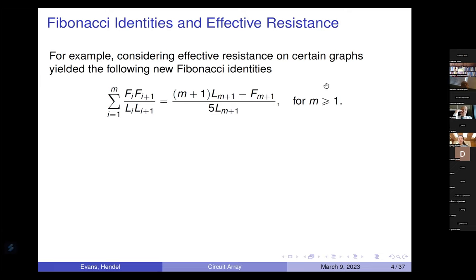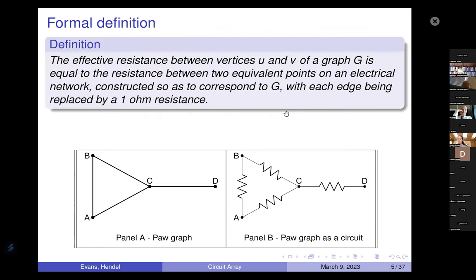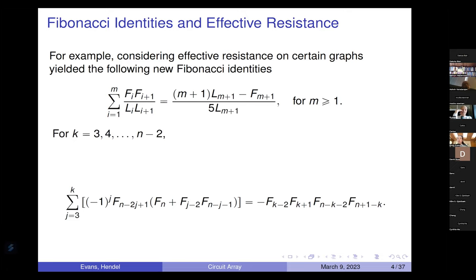We stumbled upon two different Fibonacci identities. We stumbled upon these identities and they were really interesting to us. My collaborator Amanda Francis went to talk at a combinatorics and number theory talk because we were interested in all these interesting sequences of numbers that we discovered. I've been talking about effective resistance and Russell's talked about circuits. Let me give you a more formal definition.